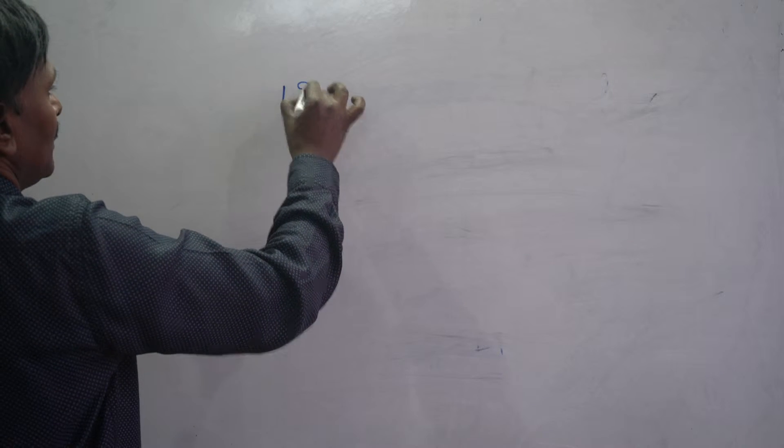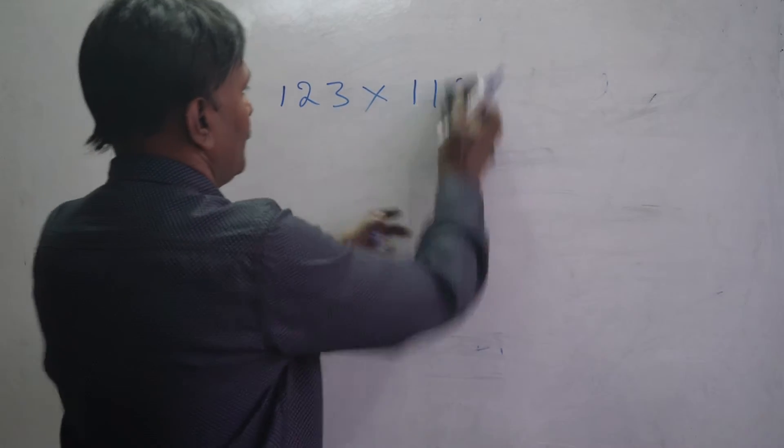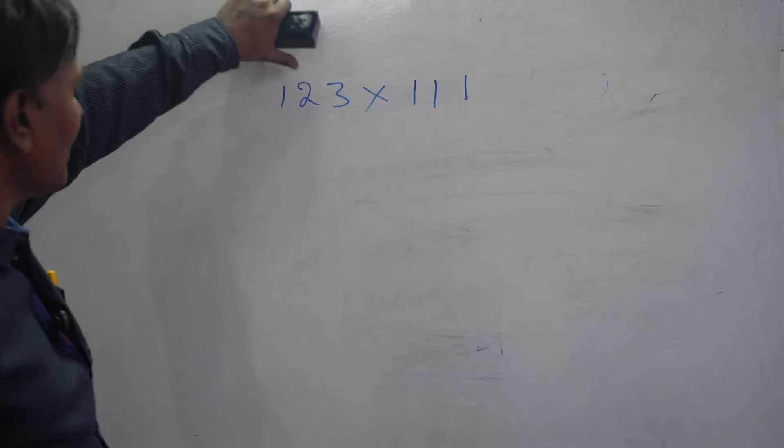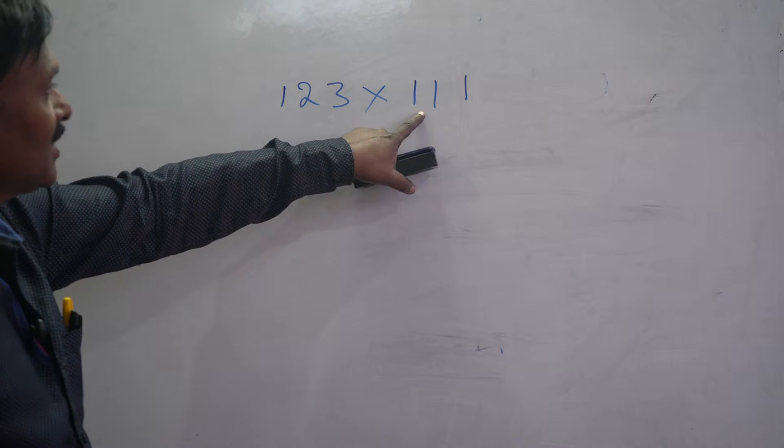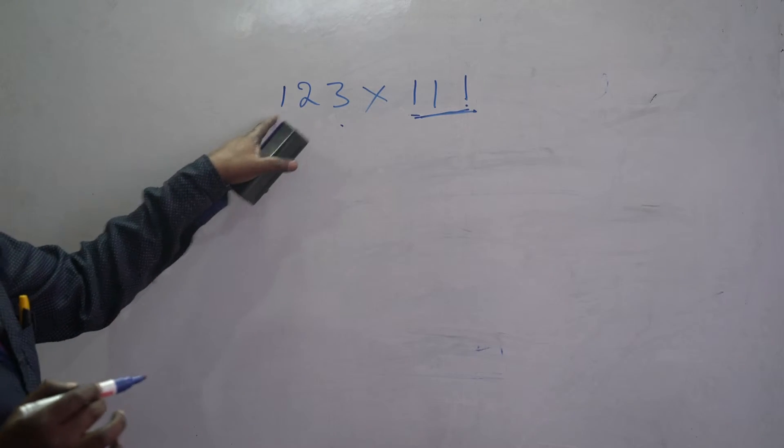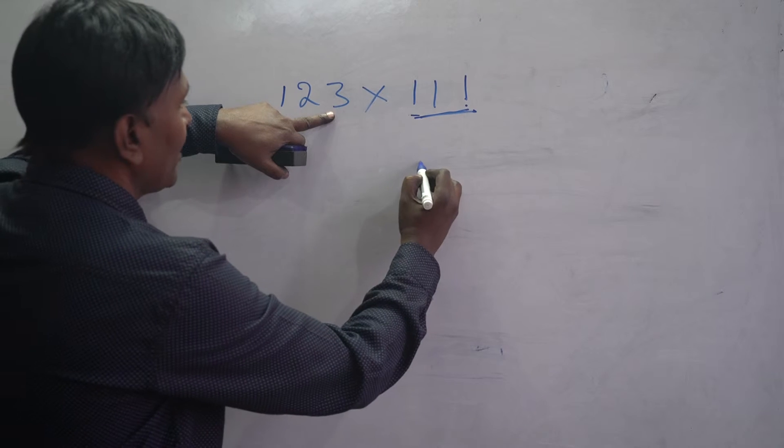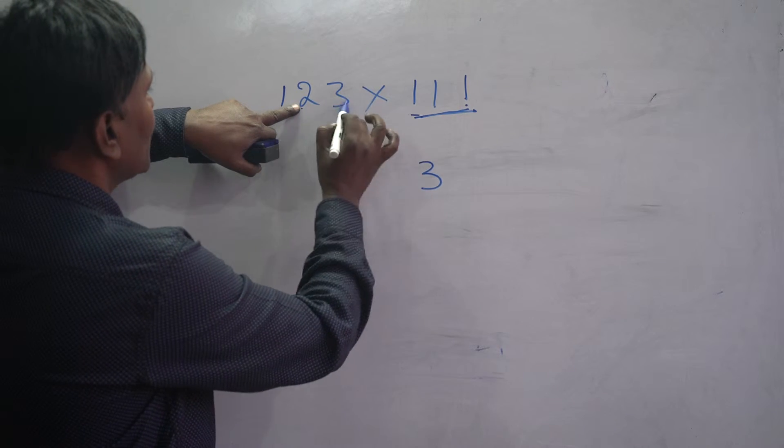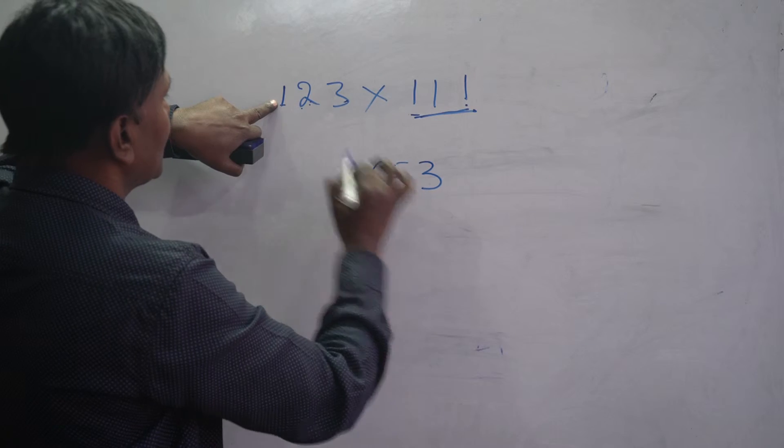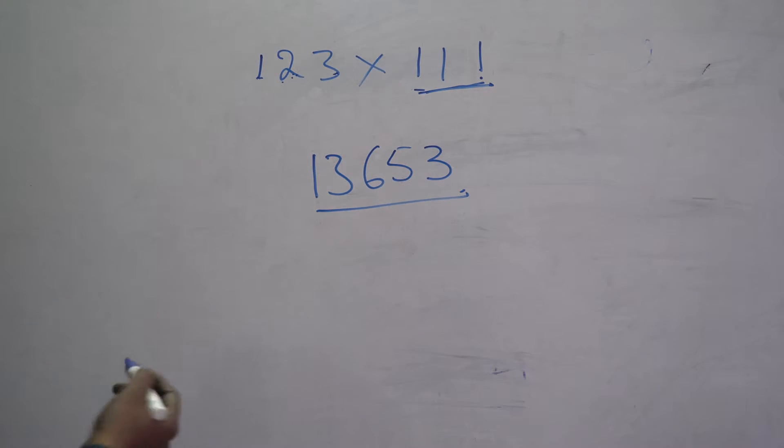Now suppose here, any three-digit number you take. If you take any three-digit number, multiply with the triple one, 111. How to do that one? Take 123. This is 3, directly you write it here. 2 plus 3 is 5. 1 plus 2 plus 3 is 6. 2 plus 1 is 3, then 1. So the answer is 13,653.